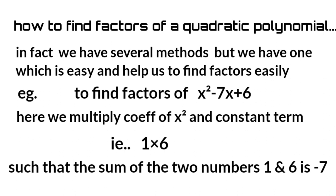For example, to find factors of x² - 7x + 6: Here we multiply the coefficient of x² and the constant term, that is 1 × 6, such that the sum of the two numbers 1 and 6 is -7.